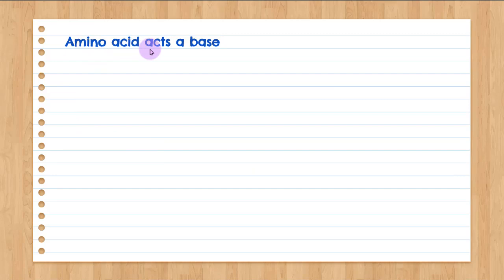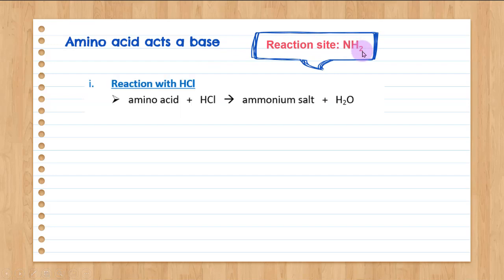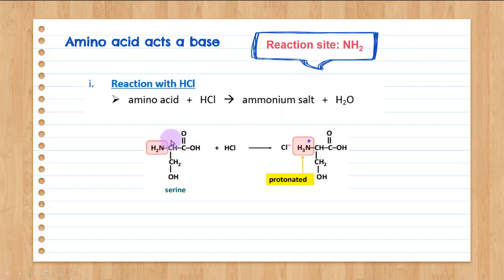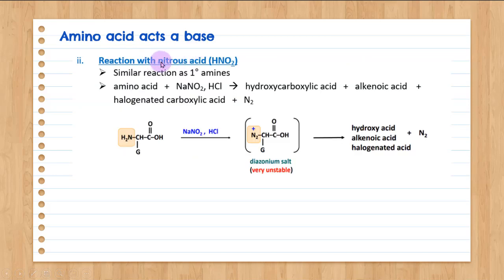Next, amino acid as a base — the reaction focuses on the NH2 group. The reaction is similar to a primary aliphatic amine. When amino acid reacts with HCl, the base reacts with the acid to form an ammonium salt — a neutralization reaction. So NH2, when reacted with HCl, produces an ionic ammonium salt. The next reaction is with nitrous acid, HNO2 — this is the nitrous acid test, similar to the reaction of a primary aliphatic amine.